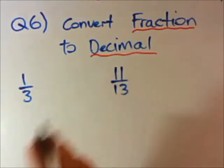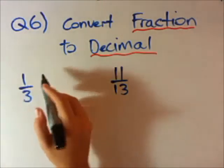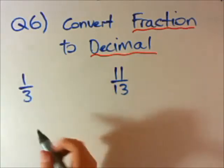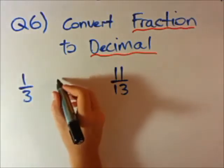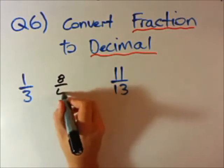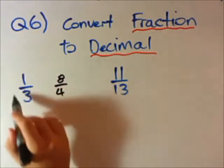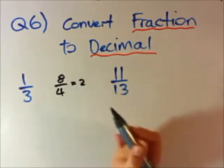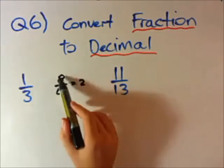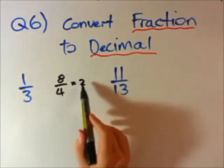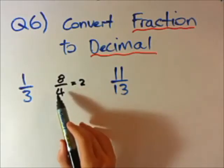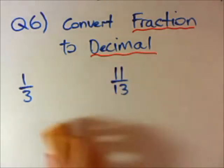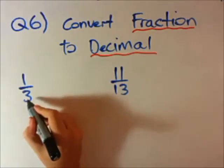Now this is how you do it. What 1 over 3 means is how many times does 3 go into 1? If we had 8 divided by 4, how many times does 4 go into 8? The answer is 2. So with that explanation, how many times does 3 go into 1?